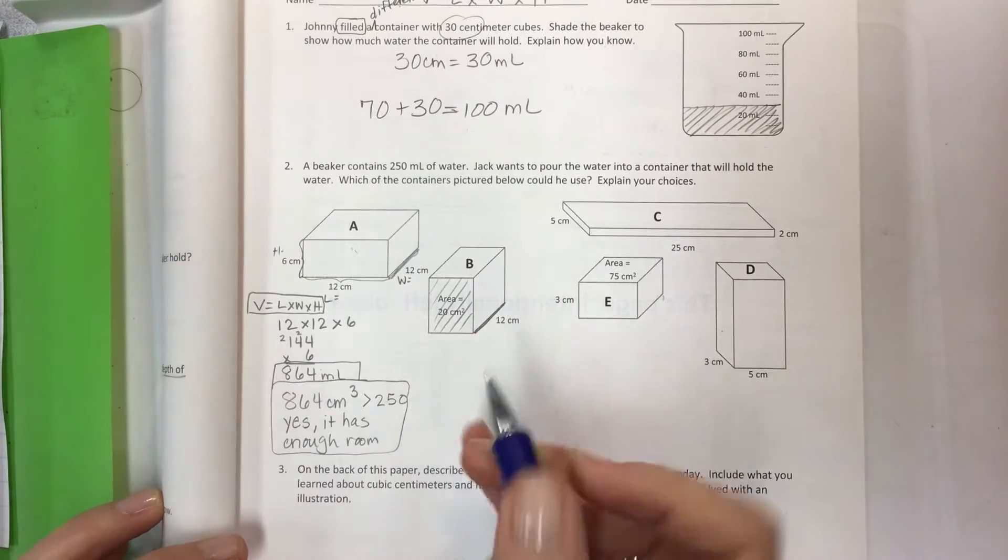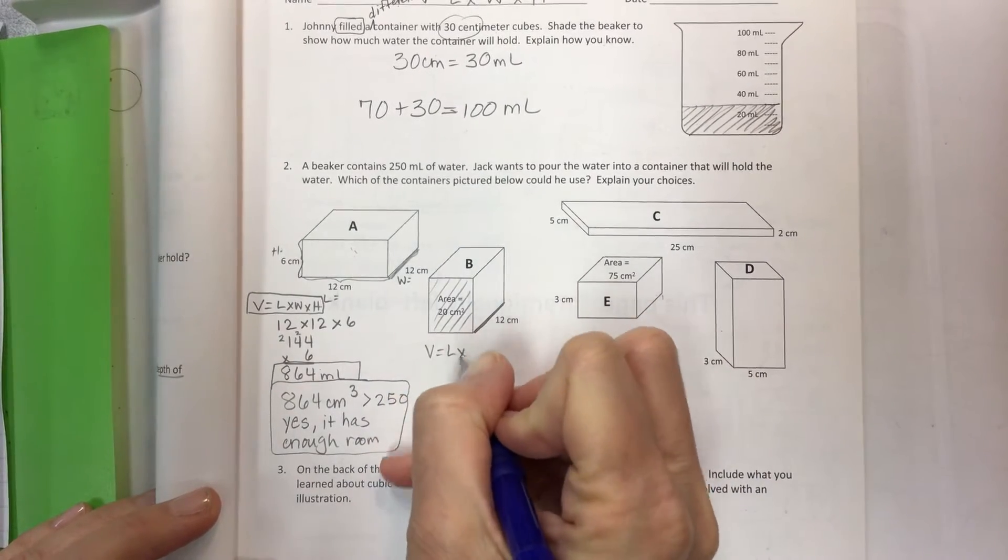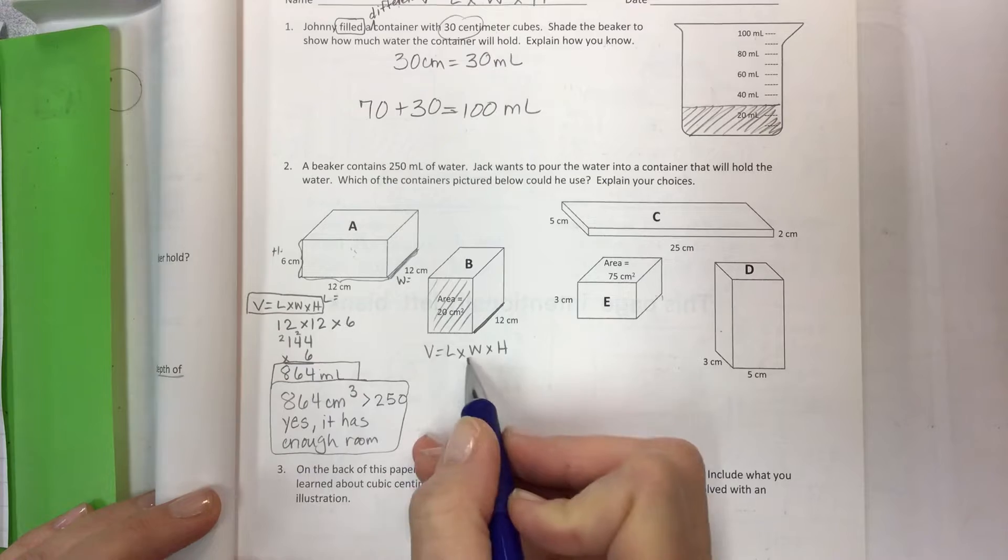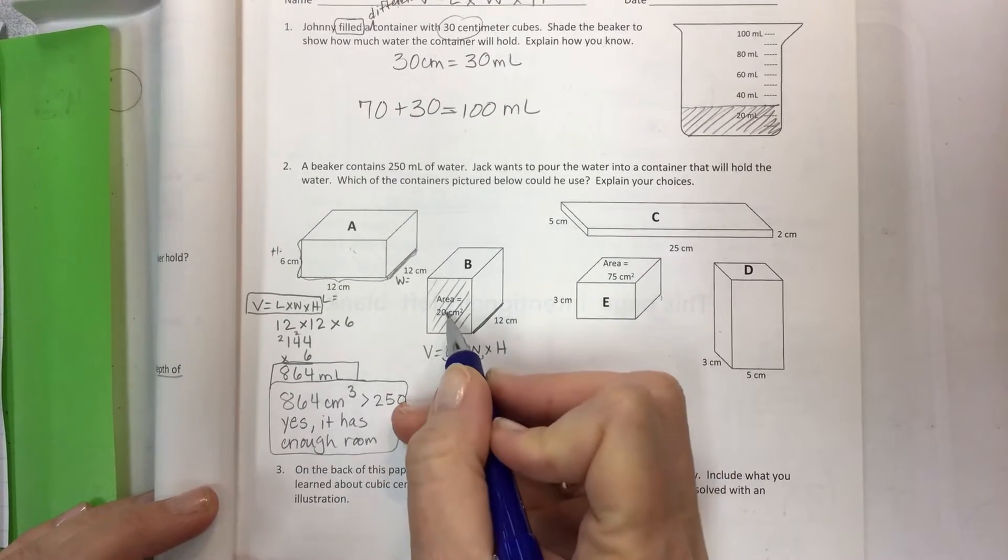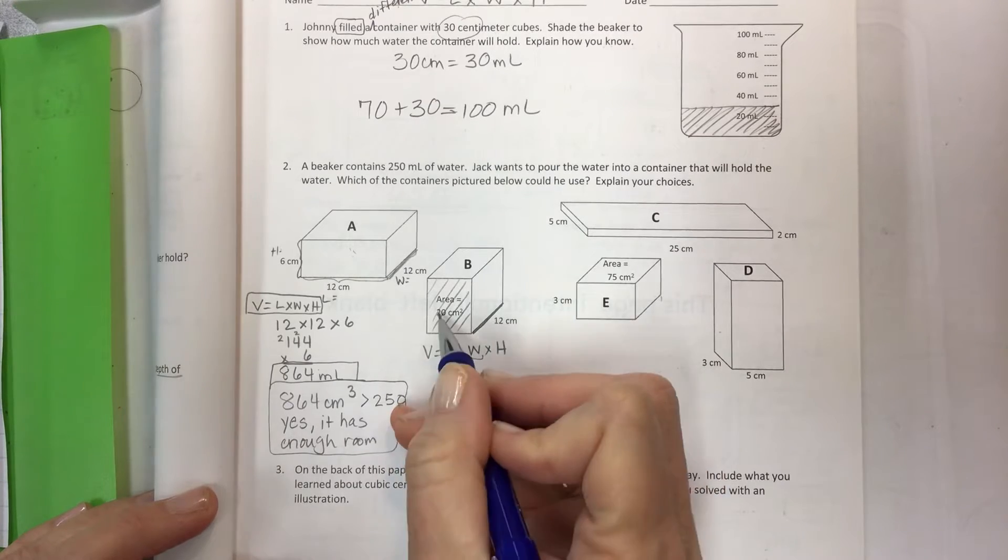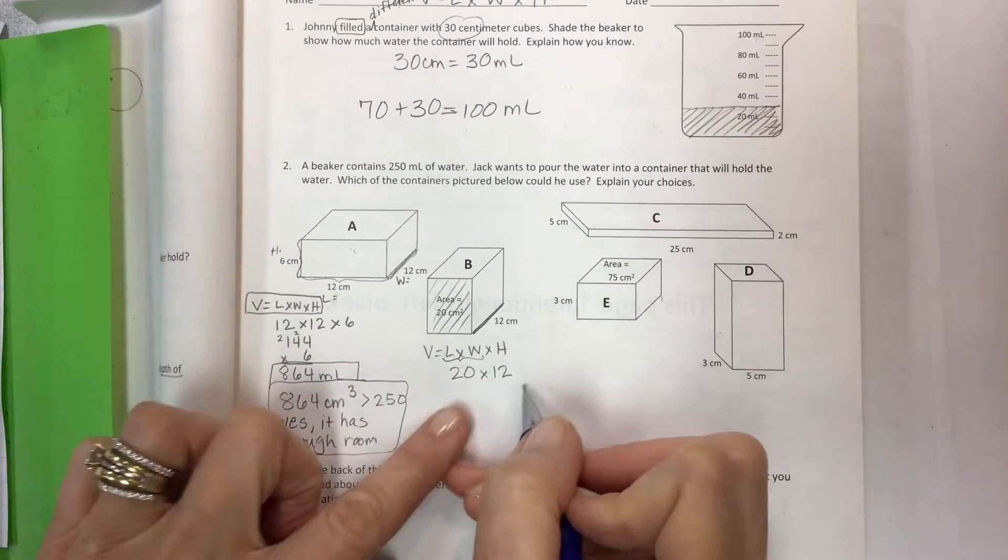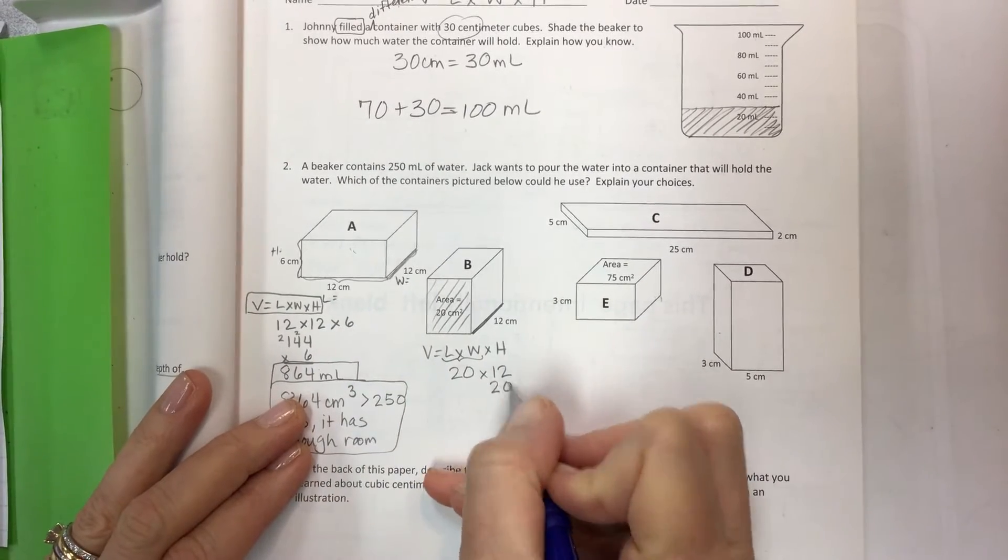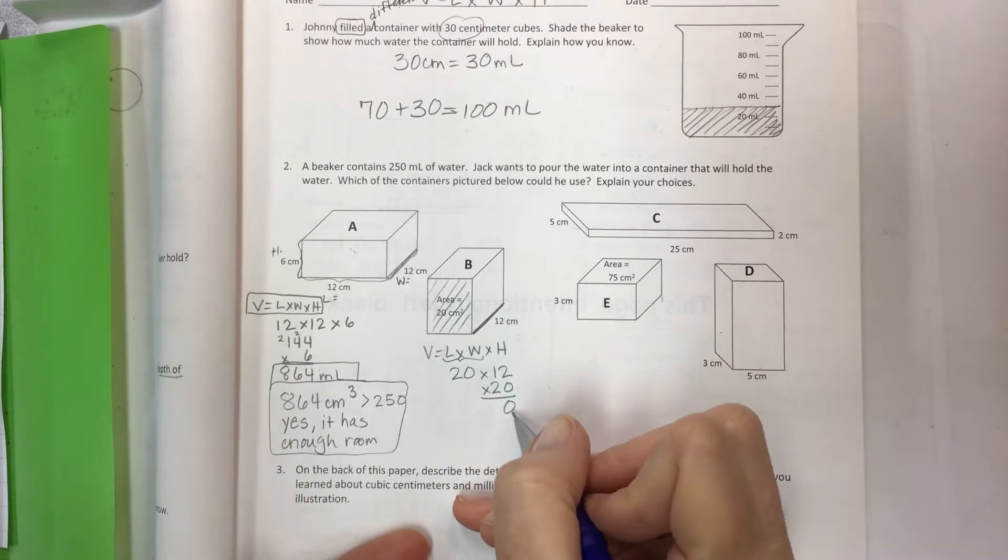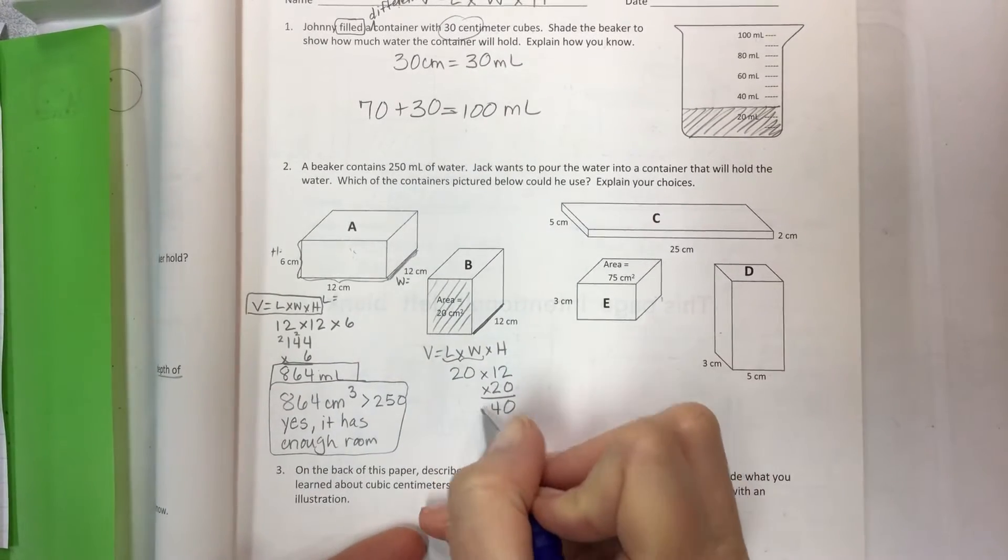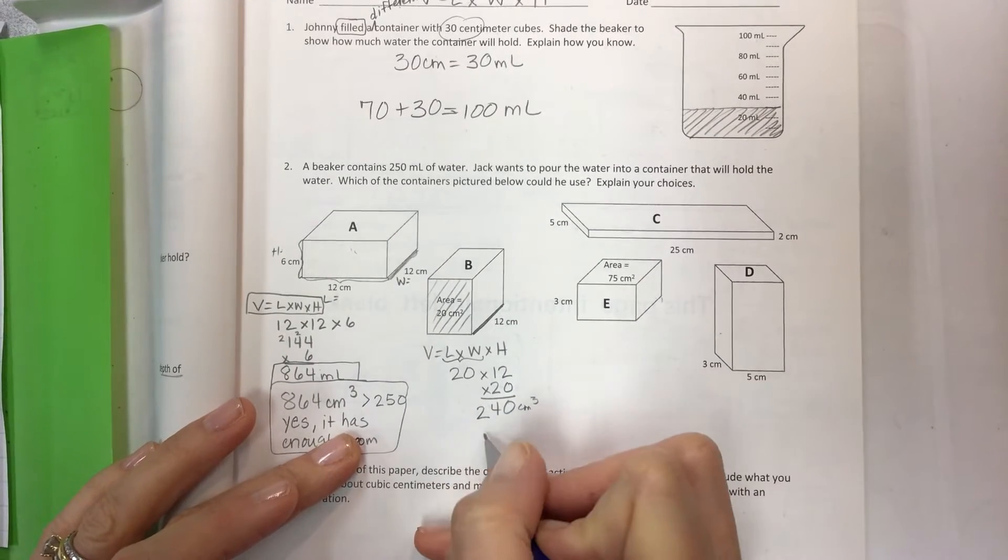Now for B we have the area of the base that's been given to you and it's like thank you they already did half the work. Because with the volume formula the area of the base is length times width, so they've already given you the answer to the length times the width - they said it's 20. Now you just have to multiply by 12. So I always like to put the zeros on the bottom because then I only have one line of data. So I have 240 centimeters cubed which is also milliliters.